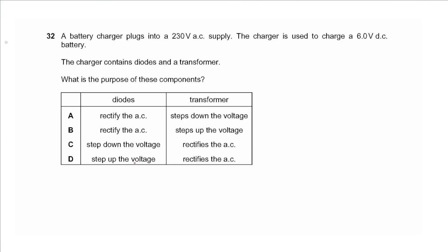Question 32 says a battery charger plugs into a 230-volt AC supply and is used to charge a 6-volt DC battery. The charger contains diodes and a transformer. Diodes are used to rectify the AC — convert AC to DC — and the transformer decreases the voltage from 230 to 6 volts, making it a step-down transformer. The answer is A.